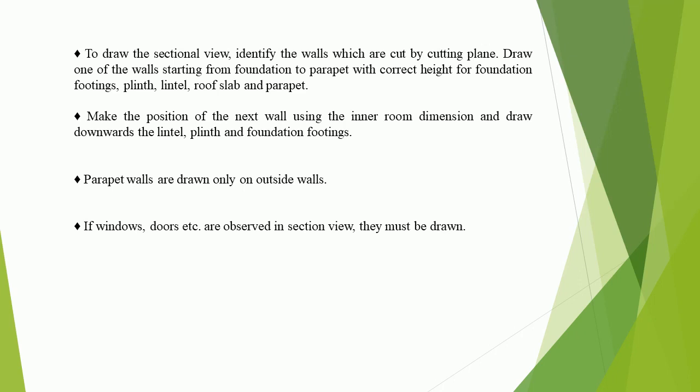Make the position of the next wall using the inner room dimension and draw downwards the lintel, plinth, and foundation footings. Parapet walls are drawn only on outside walls. If windows, doors etc. are observed in the section view, they must be drawn.